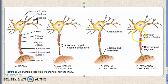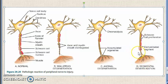Coming to segmental demyelination — this is similar to demyelination in the brain. Here there is loss of myelin of the segment between two consecutive nodes of Ranvier, leaving a denuded axon segment. However, the axon itself is intact. Schwann cell proliferation generally accompanies demyelination.